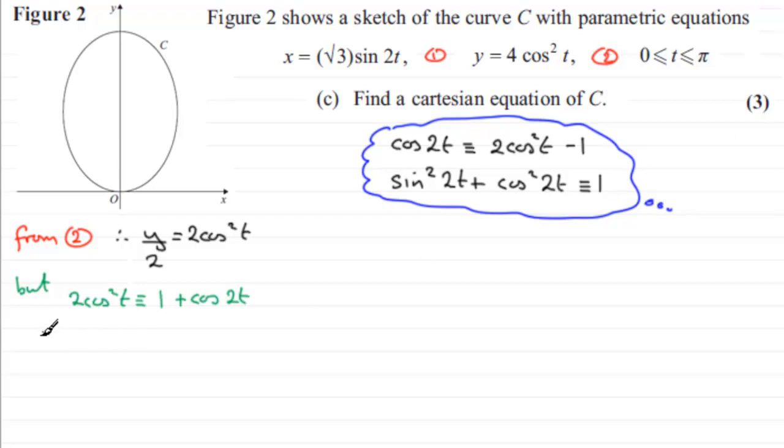So I can put this in place of this value here, 2 cos squared t. So what I therefore have is that 1 plus cos 2t must be equal to y over 2, and if I subtract 1 from both sides now, I'm going to get cos 2t equals y over 2 minus 1.